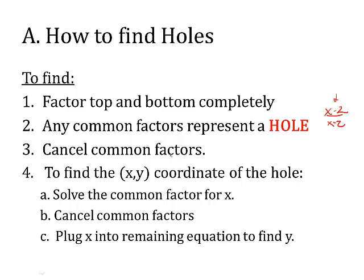So you would cancel the common factor — step 3 — and then part 4, you've got to find the xy coordinate of that hole so you can graph it correctly. Basically, you solve the common factor for x, then cancel out what the common factors were and simplify the equation. Plug that x value into the remaining equation to find y.